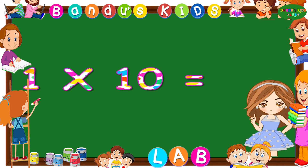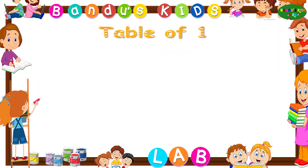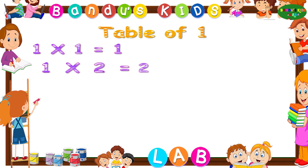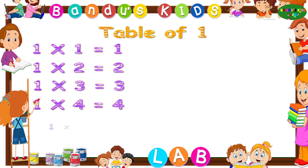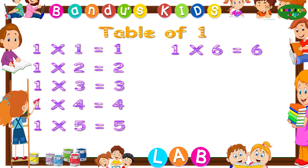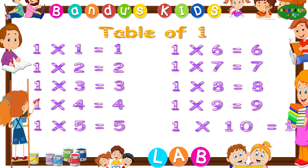One tens are ten. Now let's revise the table of one one more time by singing. One ones are one. One twos are two. One threes are three. One fours are four. One fives are five. One sixes are six.